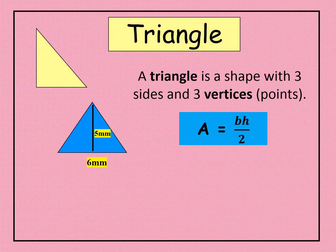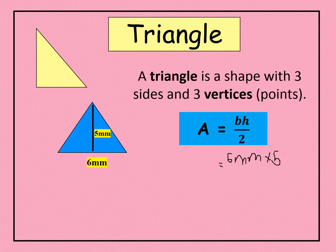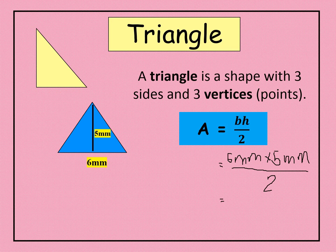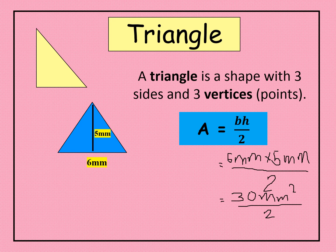Suppose that a triangle has a height of 5 millimeters and a base of 6 millimeters. Substituting into the formula: we first multiply the numerator — 6 millimeters times 5 millimeters gives us 30 square millimeters. Then we divide by 2: 30 square millimeters divided by 2 gives us 15 square millimeters. So the area of this triangle is 15 square millimeters.